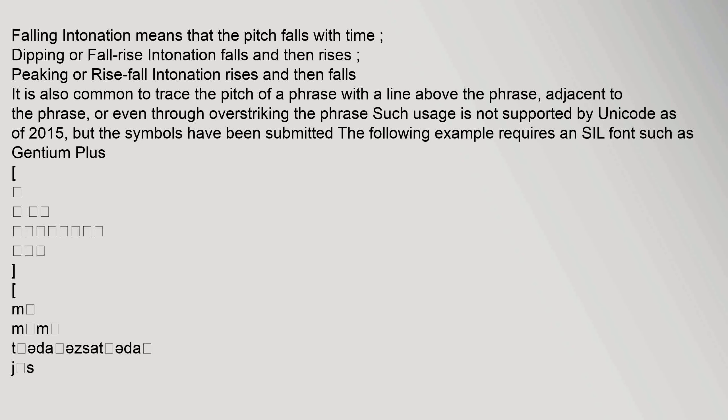Falling intonation means that the pitch falls with time. Dipping or fall-rise intonation falls and then rises. Peaking or rise-fall intonation rises and then falls. It is also common to trace the pitch of a phrase with a line above the phrase, adjacent to the phrase, or even through overstriking the phrase. Such usage is not supported by Unicode as of 2015, but the symbols have been submitted.